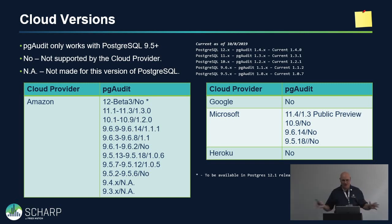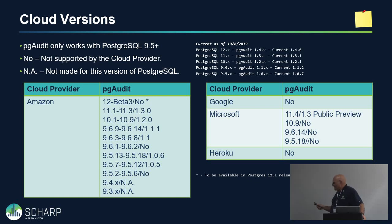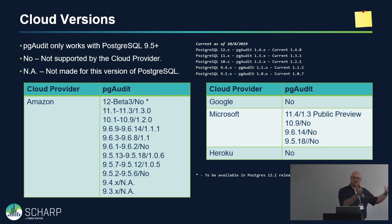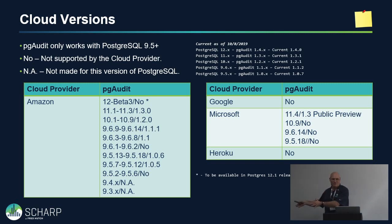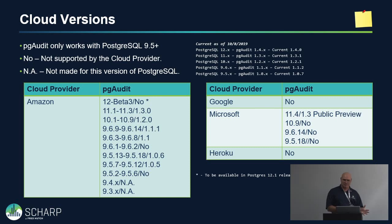Microsoft historically didn't have pgaudit support. When I gave this presentation in March, they were only on version 10 and none of their versions supported it. They now have 11.4 installed and as of September have pgaudit 1.3 on Postgres 11 — but it's public preview, meaning if you have a service contract and a problem with pgaudit, you're on your own until it comes out of preview. Heroku and Google do not support pgaudit.